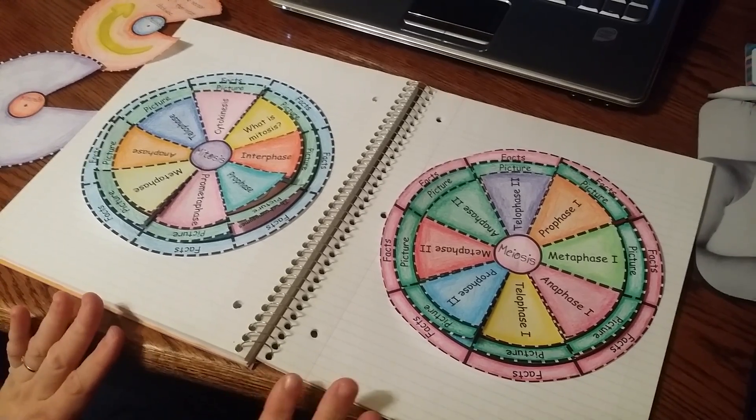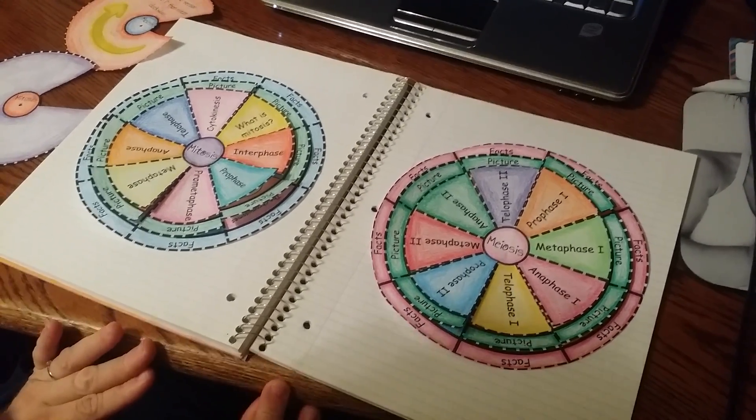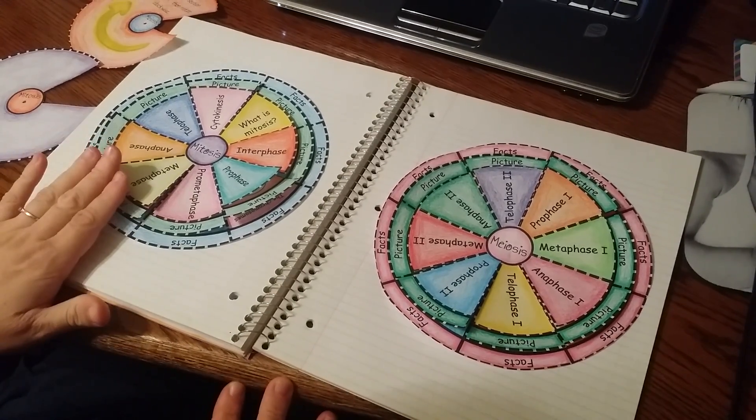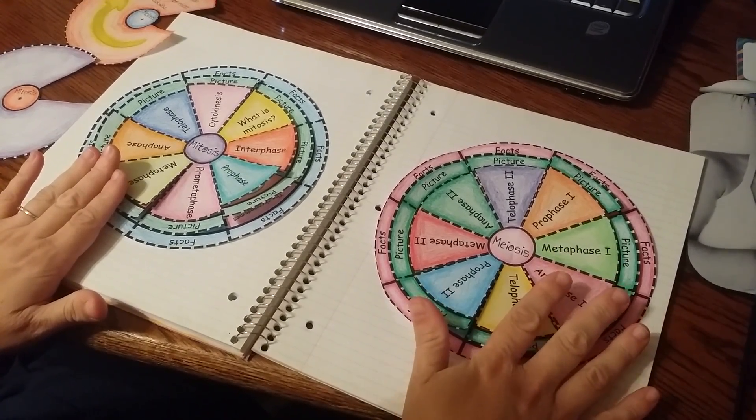Hi there, so I have two foldables. This is a bundle that has my mitosis foldable and my meiosis foldable.